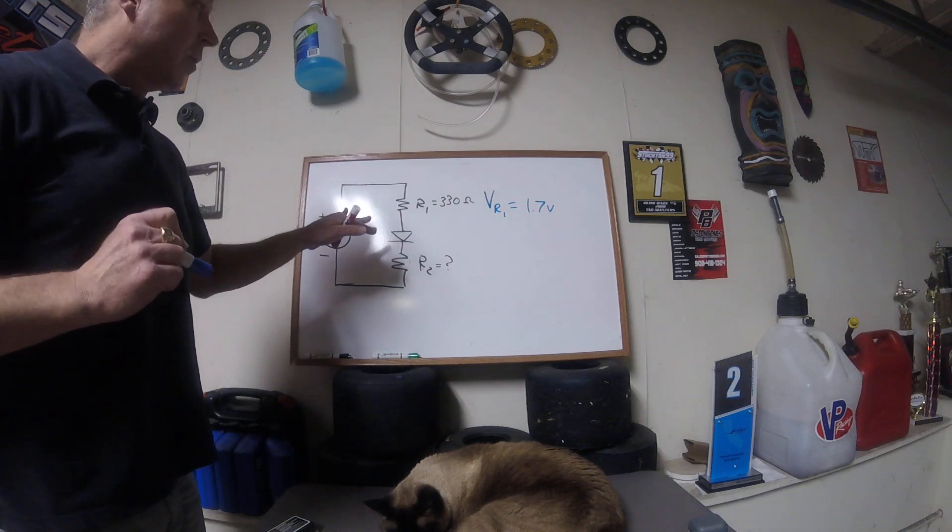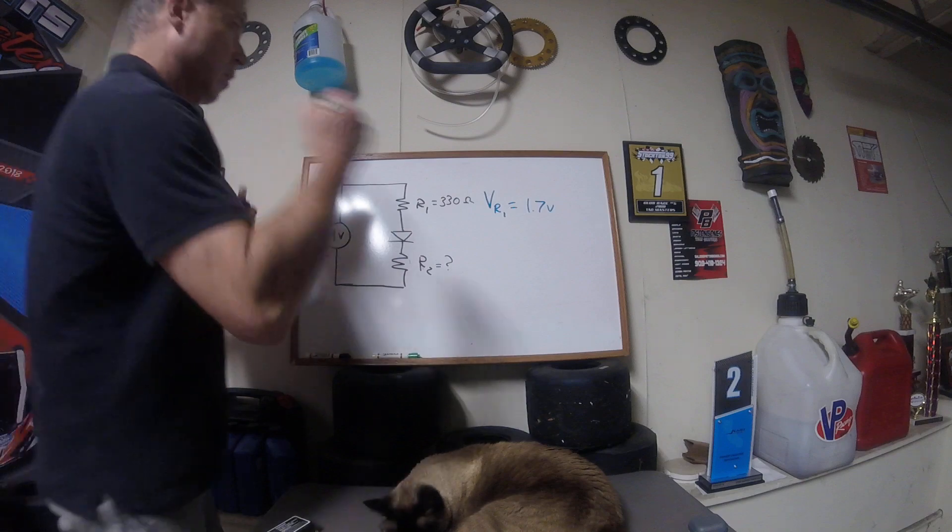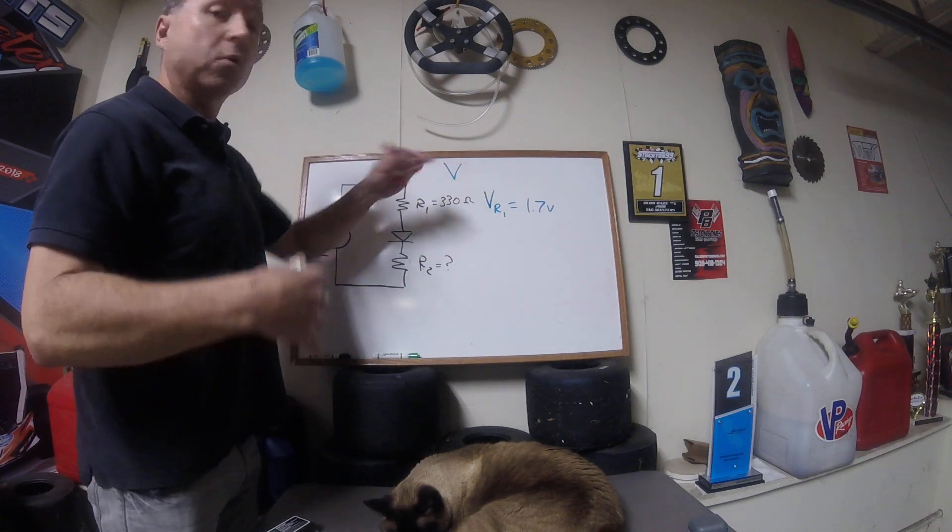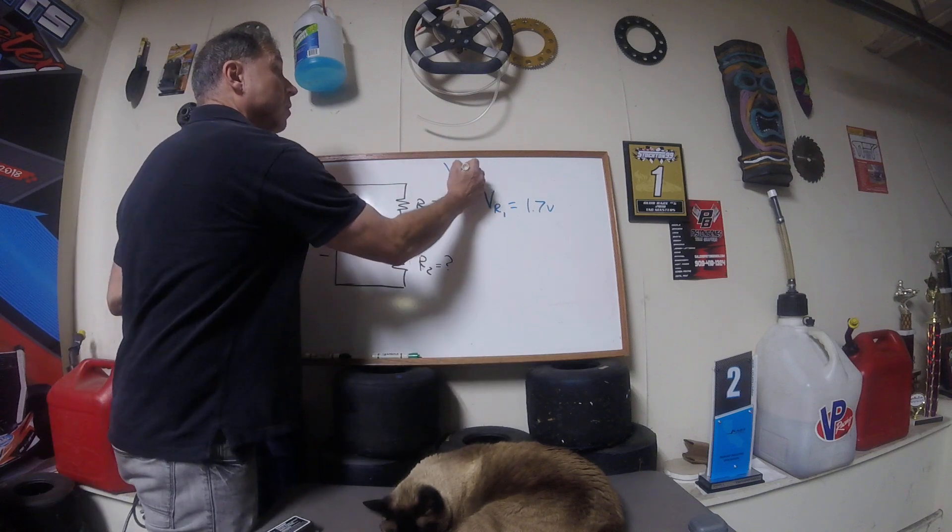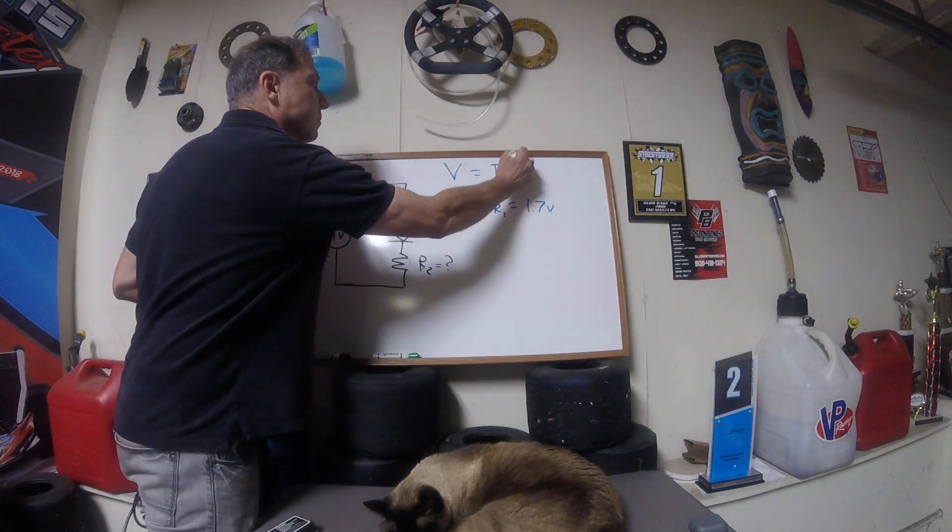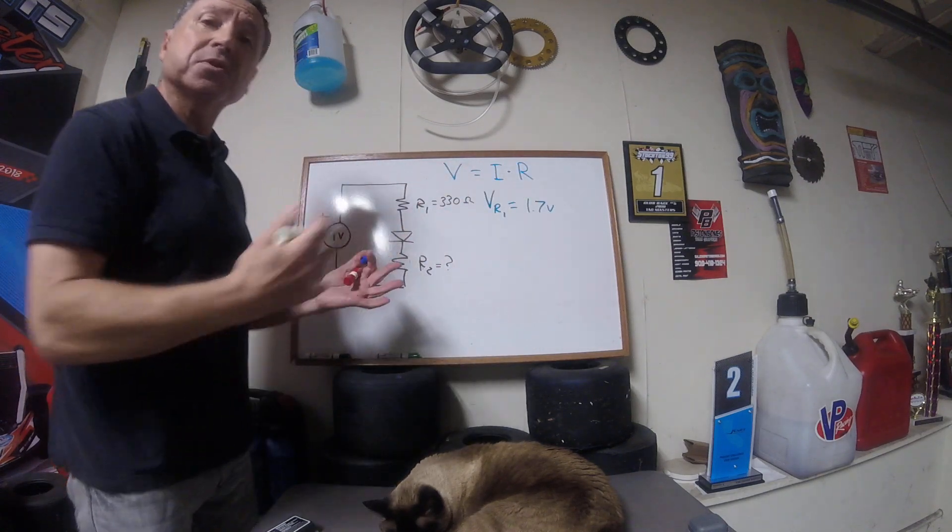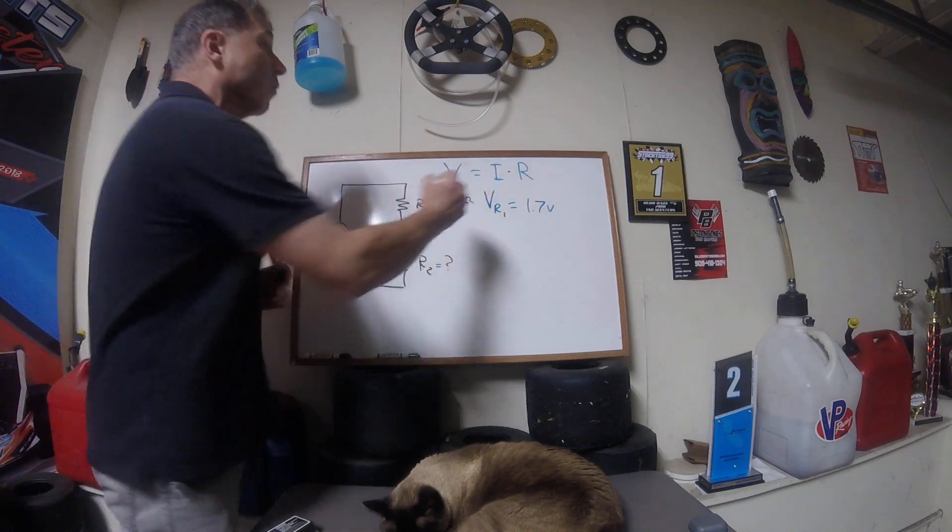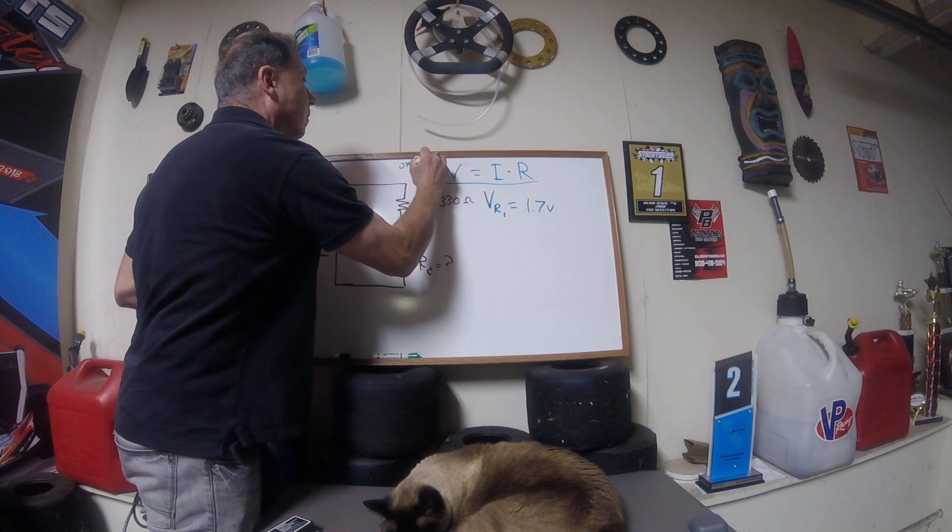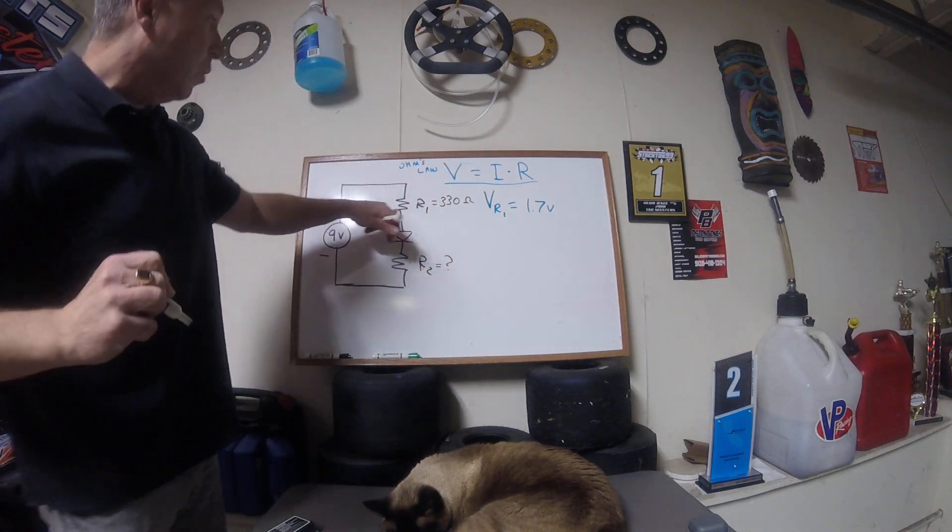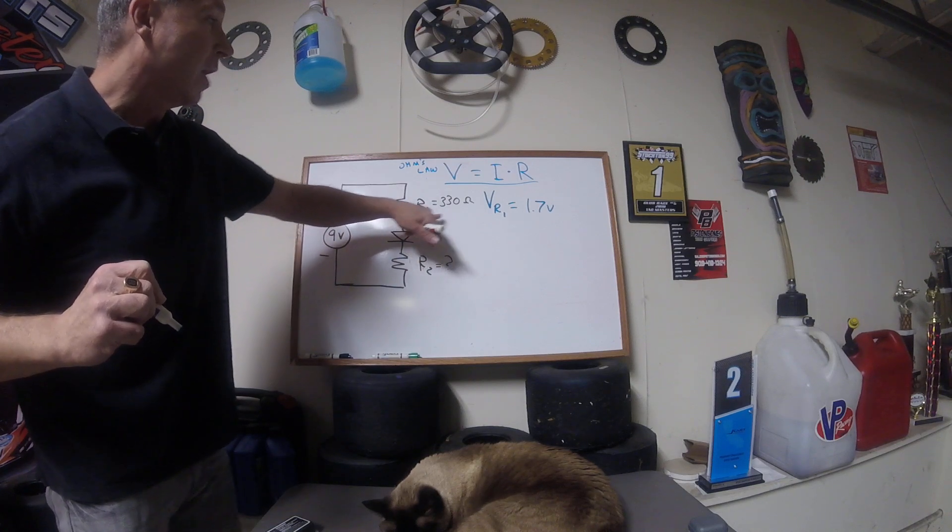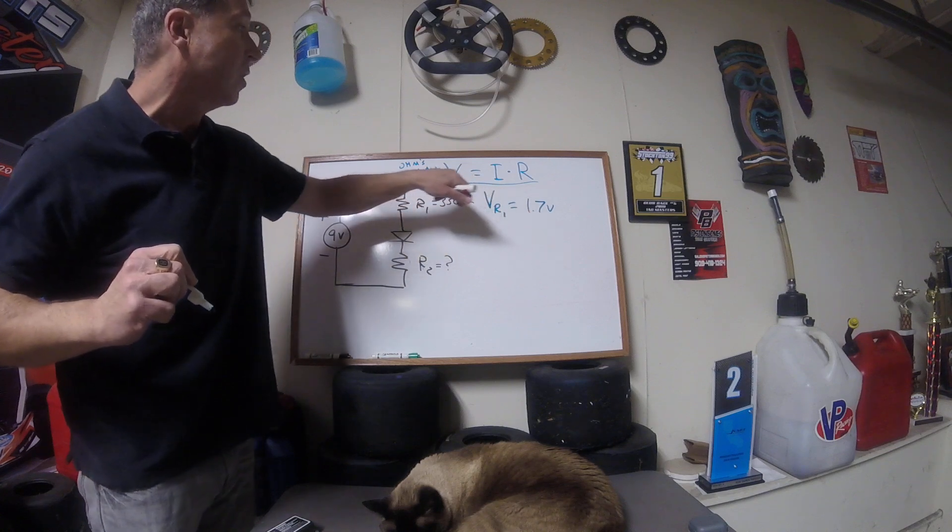With Ohm's law, we need 2 out of 3 of the values to find a third. So remember, Ohm's law was V for voltage, or electrical pressure, or difference of potential, is equal to I for current in amps, times R, resistance, opposition to current flow in Ohms. So that's the basic formula for Ohm's law here.